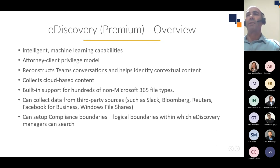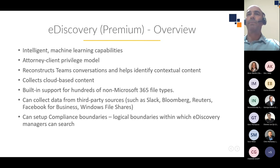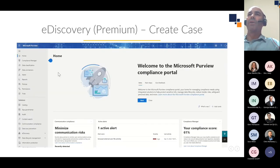E-Discovery Premium has intelligent machine learning capabilities such as deep indexing, email threading, near-duplicate detection, and helps you reduce large volumes of data to a relevant dataset. You can also enable an attorney-client privilege model. It reconstructs Teams conversations so that when you get a hit on a particular message, in Premium you can reconstruct that Teams conversation and identify contextual content. It allows you to collect cloud-based content shared via links in emails and Teams chats, and has built-in support for hundreds of non-Microsoft 365 file types.